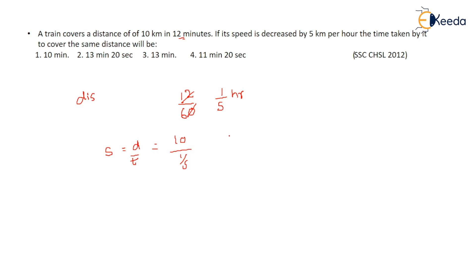Using speed = distance / time: speed = 10 ÷ (1/5) = 50 kilometers per hour. The speed is decreased by 5 km/hr, so the new speed is 45 kilometers per hour.